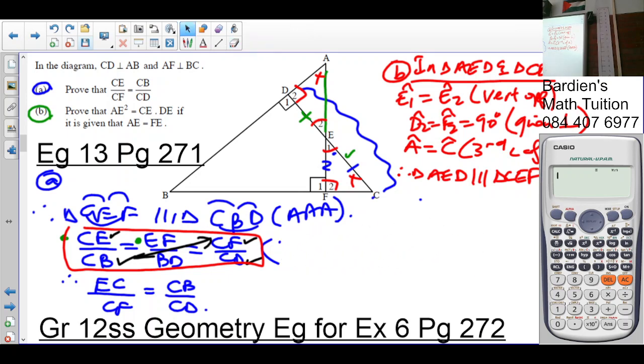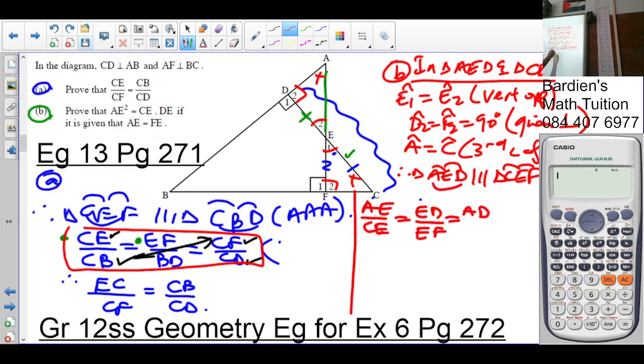And now I can conclude that AE over CE is equal to ED over EF equals AD over CF. Why? Because sides in proportion.